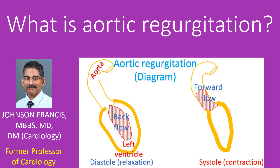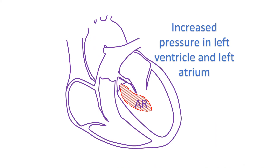When the valve is leaky, it leads to volume overload of the left ventricle, which has to pump more blood in its next contraction. Part of the blood returns back to the left ventricle when it relaxes, and the cycle continues. This overload leads to enlargement and gradual increase in the wall thickness of the left ventricle to handle the extra workload. The pressures in the left ventricle also rise due to the extra blood volume.